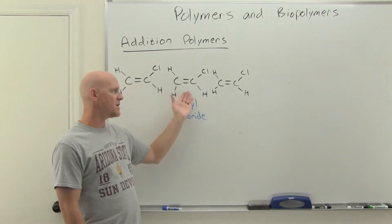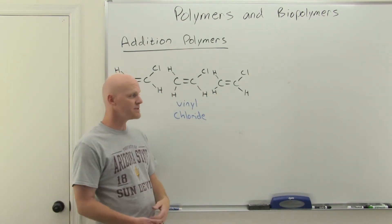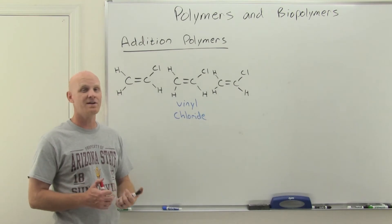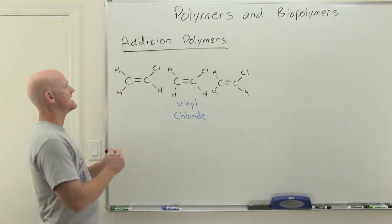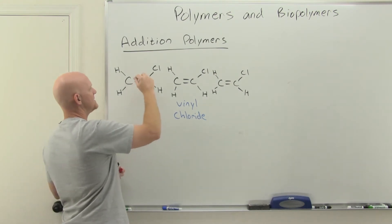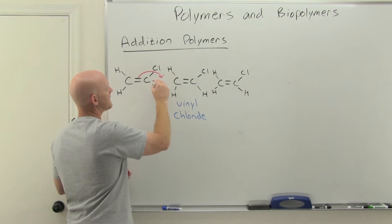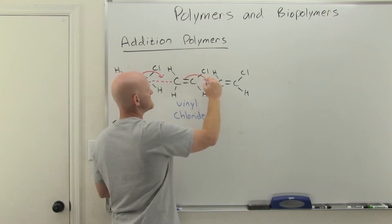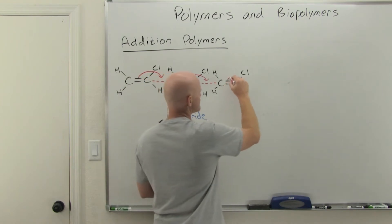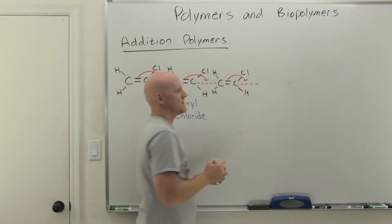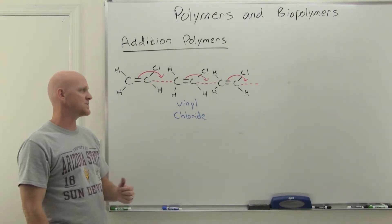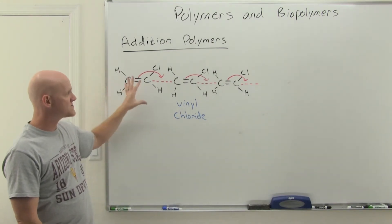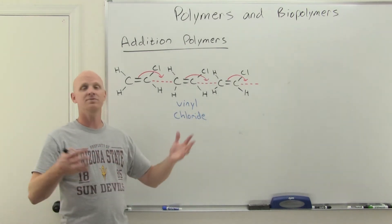Because every single monomer is exactly the same in this case, it is not called a copolymer — it is simply referred to as a polymer. Addition polymers typically involve alkenes. The way this works is you end up breaking the pi bond — the second bond of the double bond — and using those electrons to make a new bond to the next alkene, continuing down the chain. You also have to add some sort of initiating agent, called an initiator, which are sometimes radicals, into a solution of vinyl chloride to get this to happen. And out comes plastic — in this case, polyvinyl chloride.